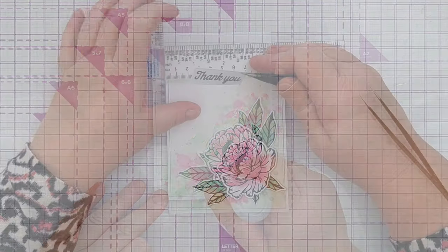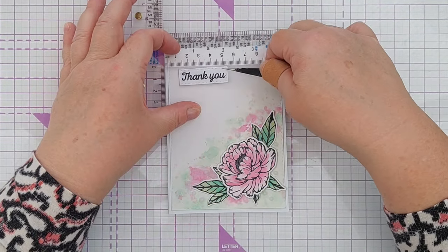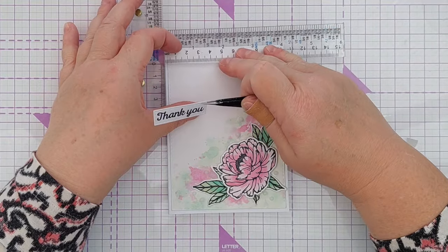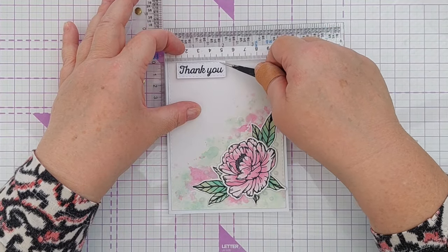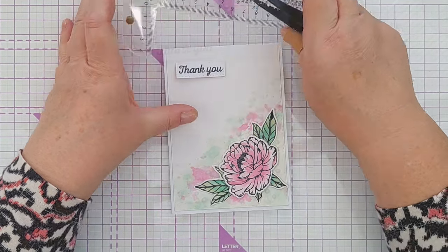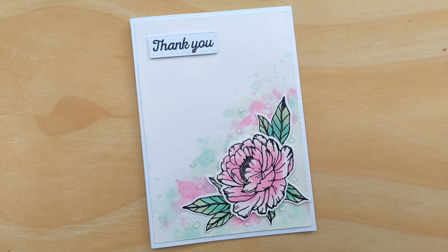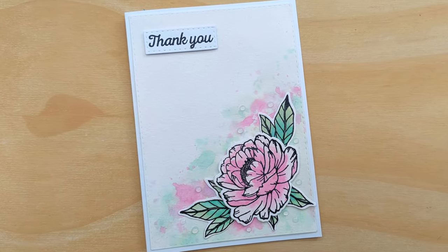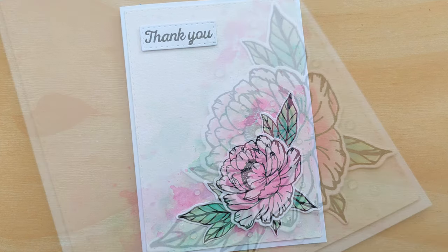And then I added my sentiment—I stamped in black again and clear embossed on top the words 'thank you,' and cut that out with a stitched rectangle die, popped that up again on craft foam in the top left corner, and that was my card done.